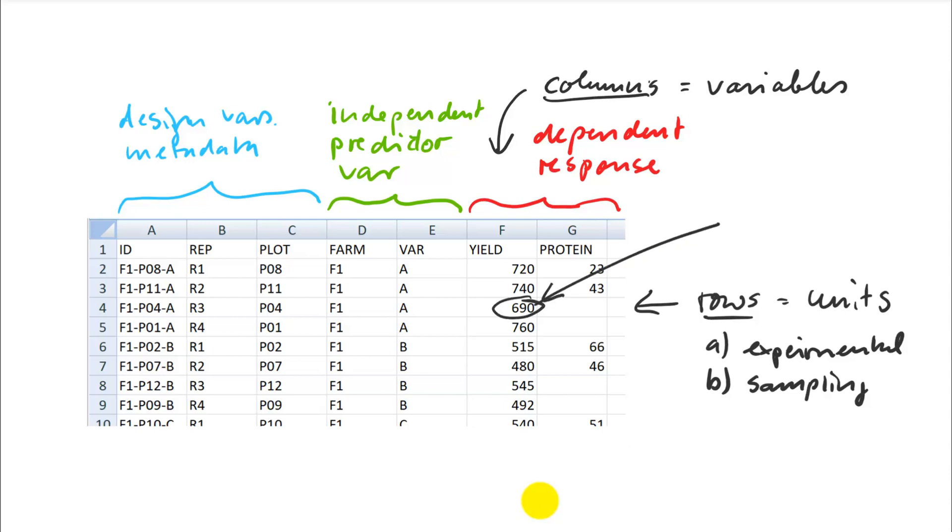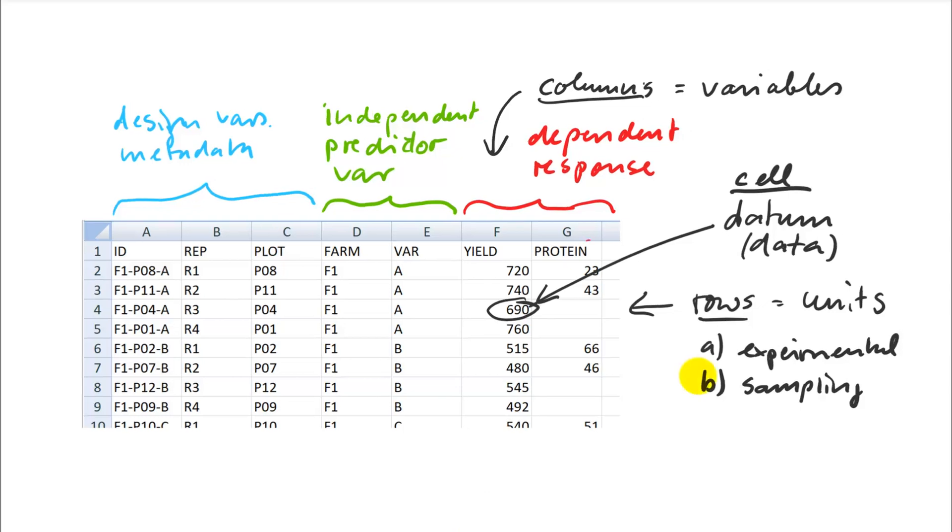And just for completeness, we should also define what this is. So this is a datum, or what you measure. So the measurement you take on your study subjects, they are called a datum, or the plural is obviously data. So that is what a cell represents.